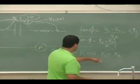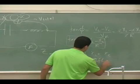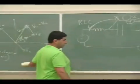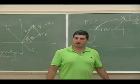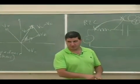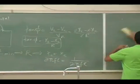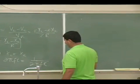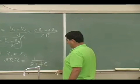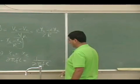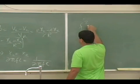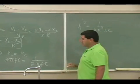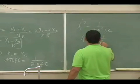So if XL equals XC, that means 2πFL equals 1 over 2πFC. That's called the resonance frequency — when the effect of the inductor cancels the effect of the capacitor. Solving this: F squared equals 1 over 4π²LC, so F equals 1 over 2π times the square root of LC.